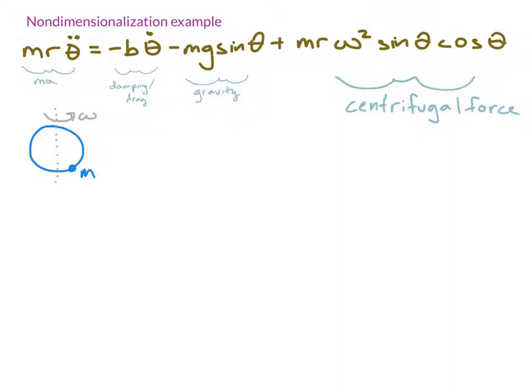The equation is basically saying F equals MA. So MA is over on this side, mass times these two things combined to create our acceleration term.